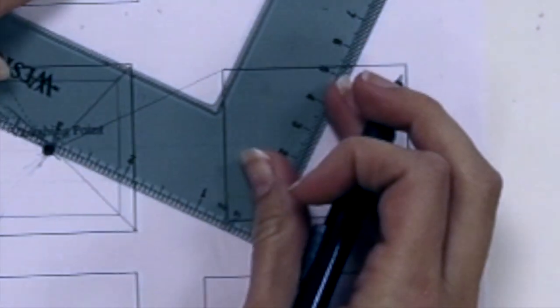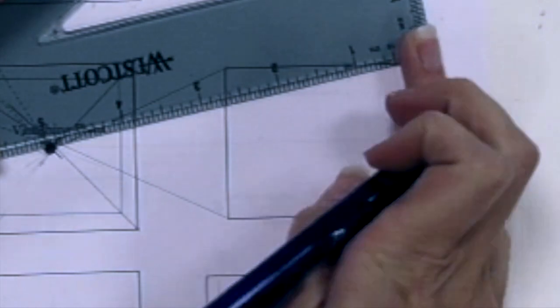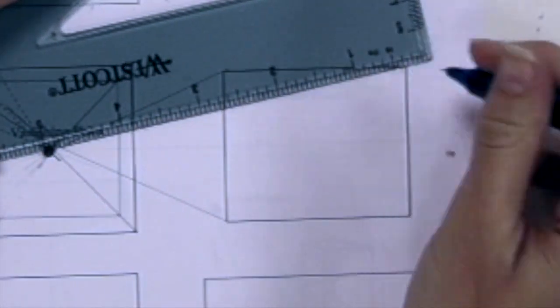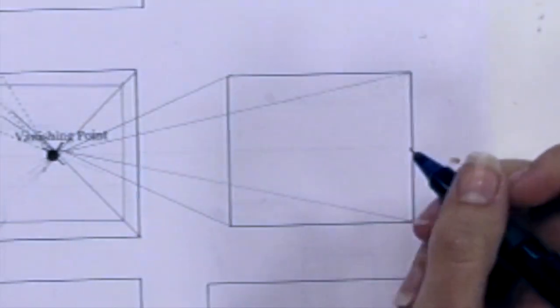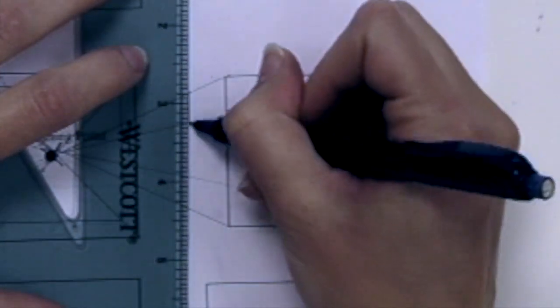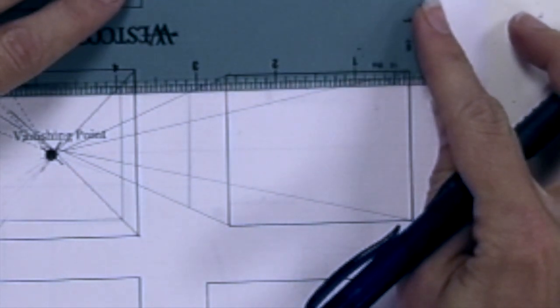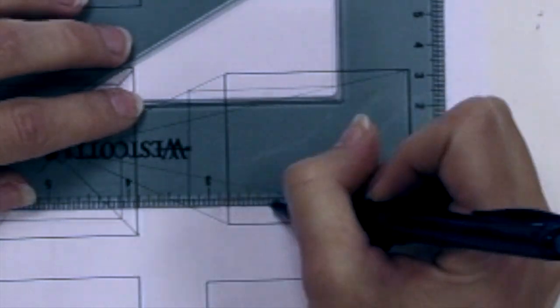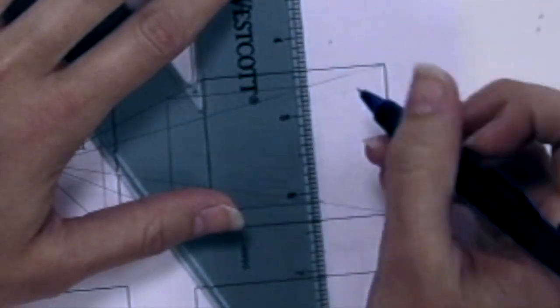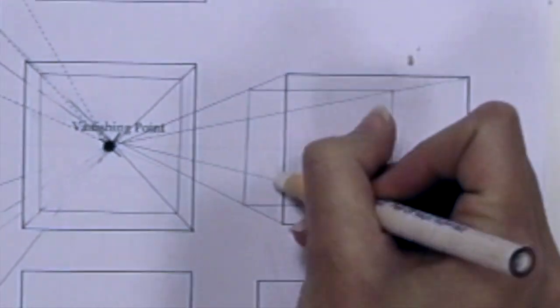Here's another box. This time, we can see the left side of it instead of the right side. Still using every corner of the box to find a point that needs to connect back to the vanishing point. Deciding how deep the box will be, connecting the back sides of the box with horizontal lines and vertical lines. And there you have it. You just need to erase your extra lines.